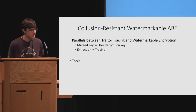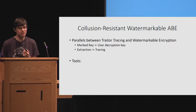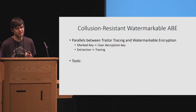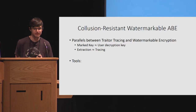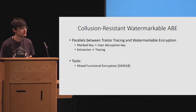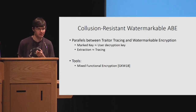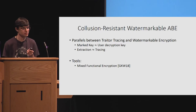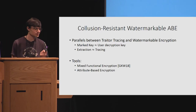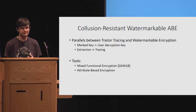We were able to achieve this using tools recently developed in the traitor tracing literature — in particular, the notion of mixed functional encryption introduced by Goyal, Coppola, and Waters — and of course we also needed attribute-based encryption.